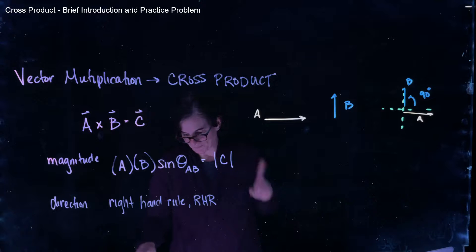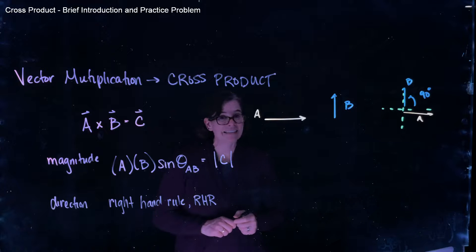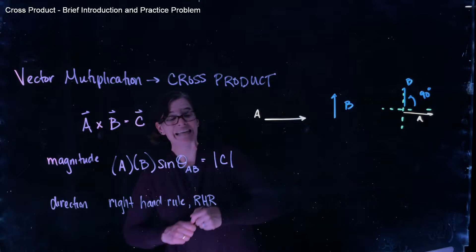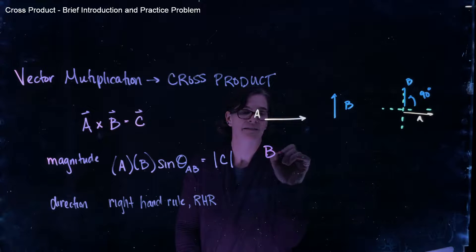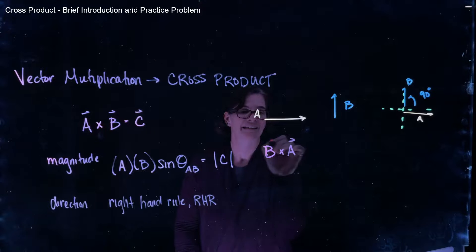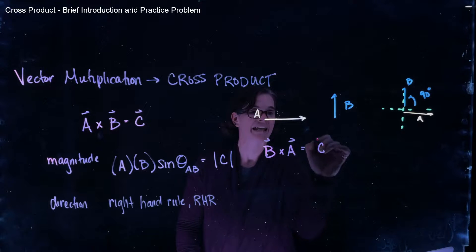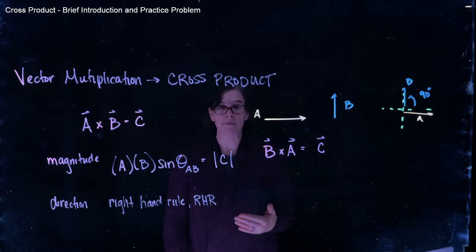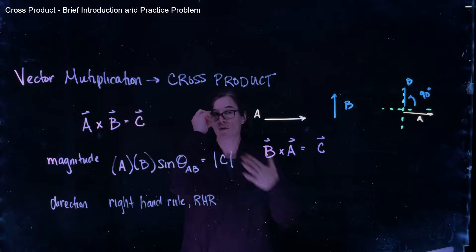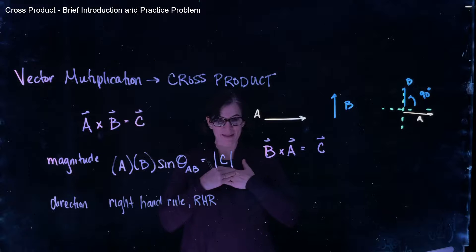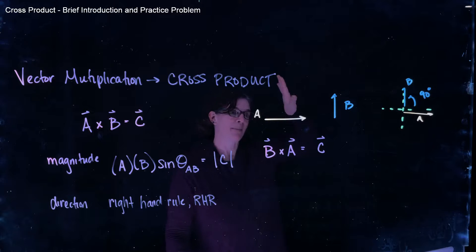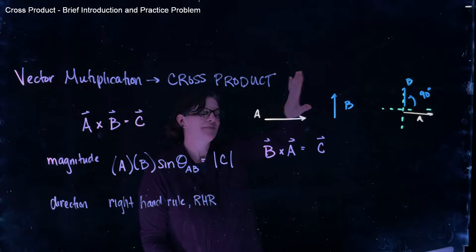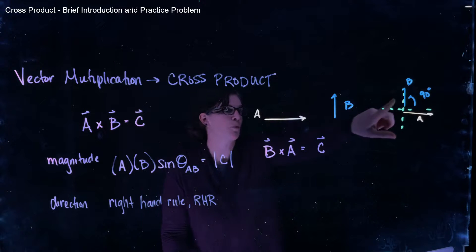Now, the order matters. If instead I wanted to take the cross product of B cross A, how does that change my problem? B is then the first step in our right hand rule. So for my method, B would be that my fingers go in the direction of B. My fingers then curl towards A.